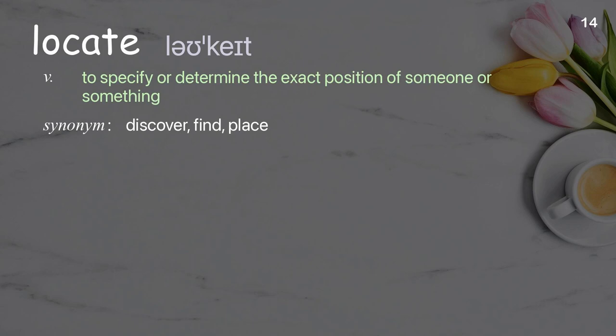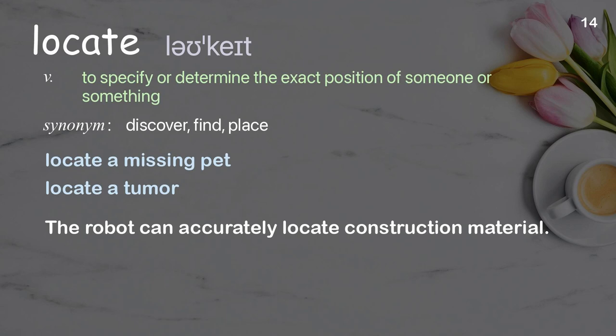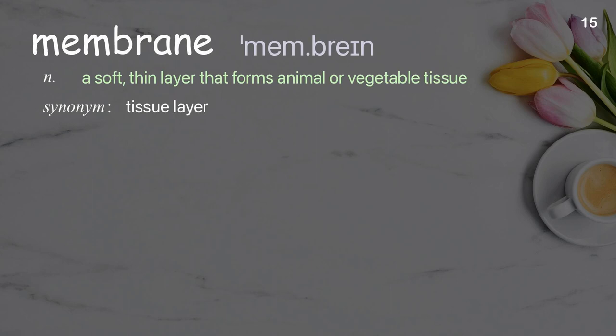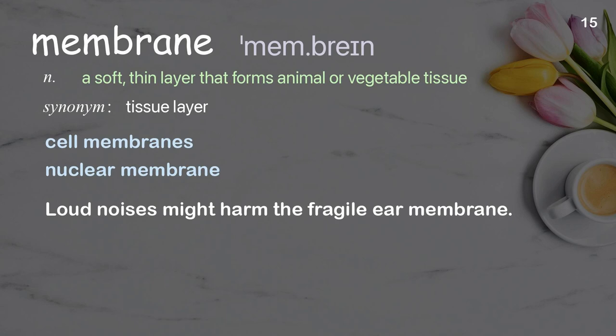Locate: to specify or determine the exact position of someone or something. The robot can accurately locate construction material. Membrane: examples include cell membranes and nuclear membrane. Loud noises might harm the fragile ear membrane.